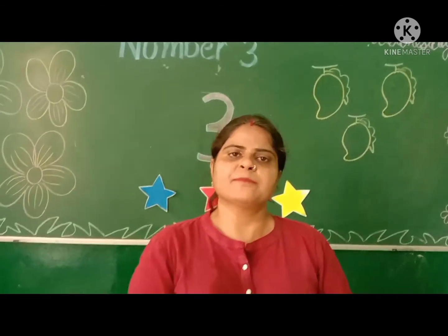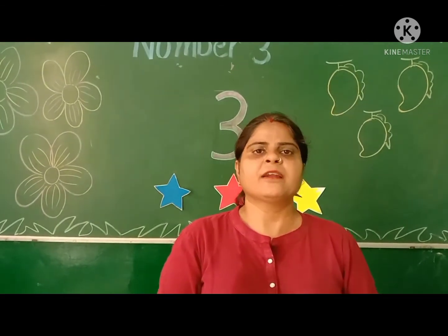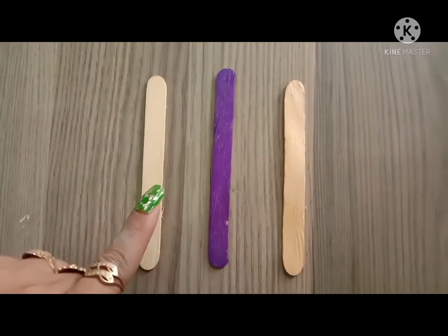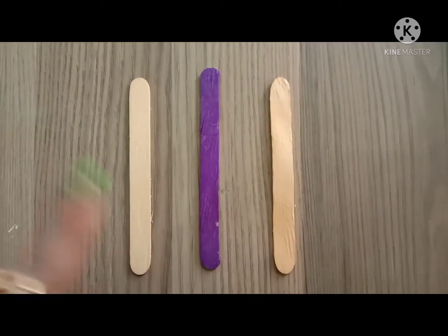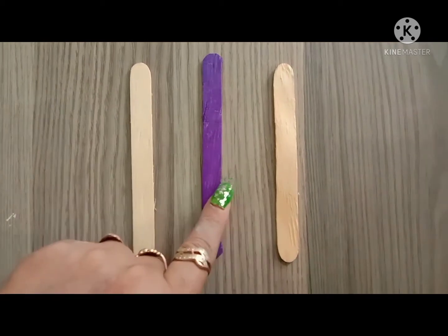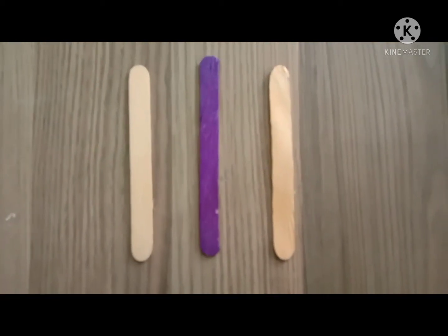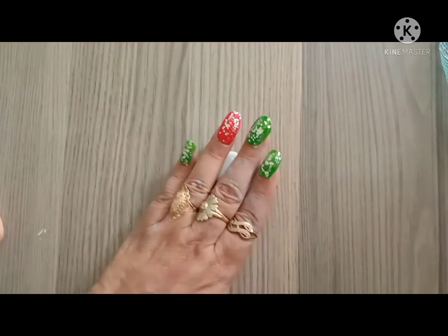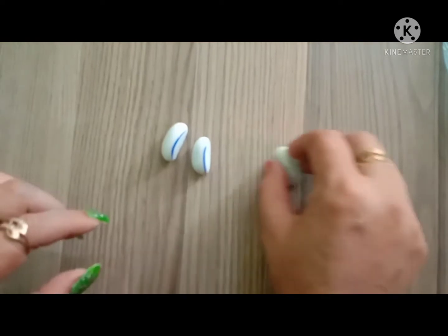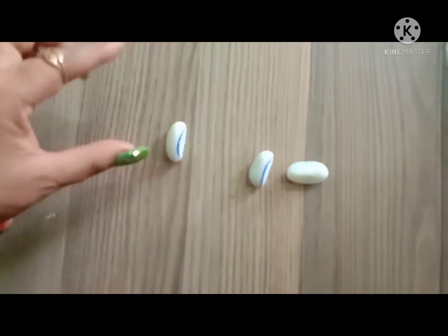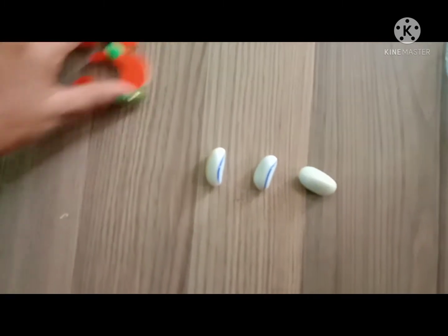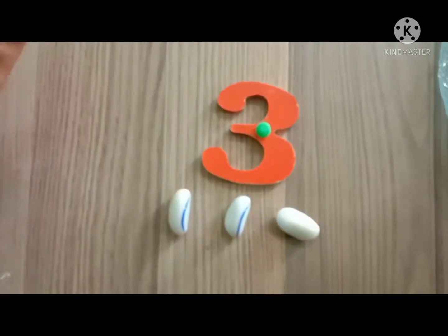Now I am showing some objects and all of you count with me. These are ice cream sticks — count with me: 1, 2, 3. That's 3 ice cream sticks. And now count these pebbles: 1, 2, and 3. Yes, these are 3 pebbles.